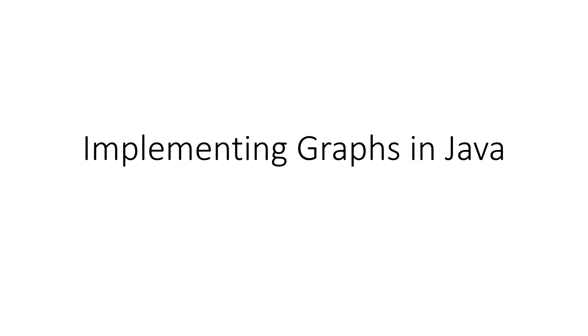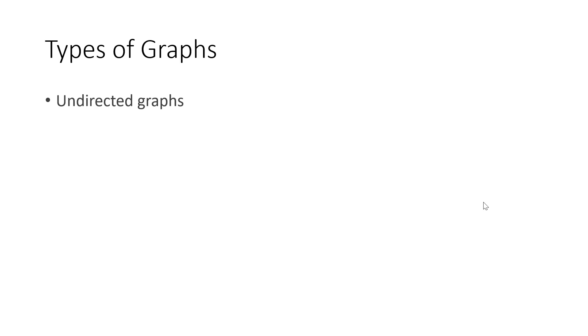Today we are implementing a graph using Java. Let me explain the different kinds of graphs we'll be implementing. The first one is the undirected graph. The primary application where undirected graphs are used is for breadth-first search, depth-first search, and for finding the connected components in the graph.